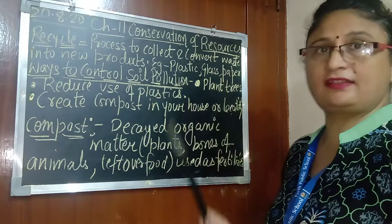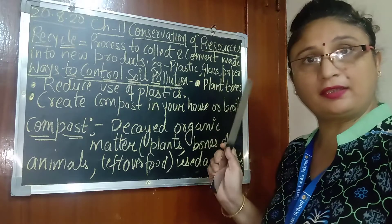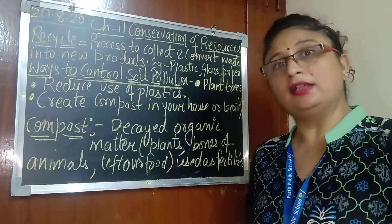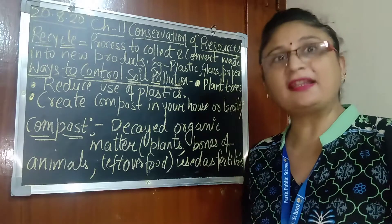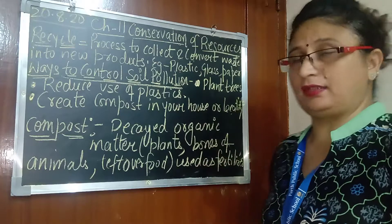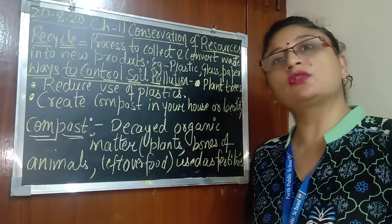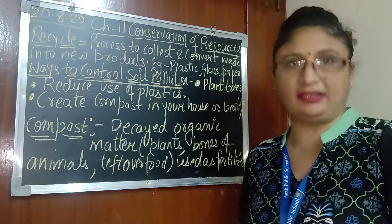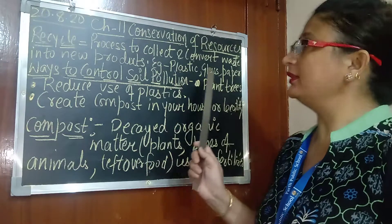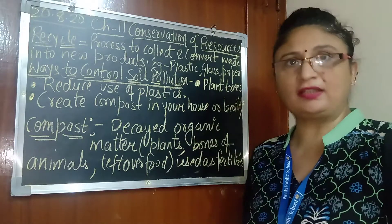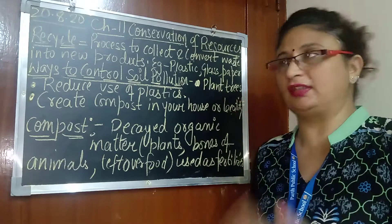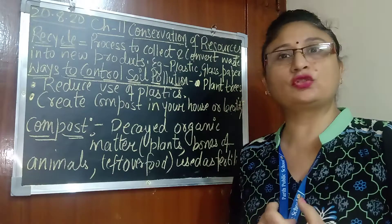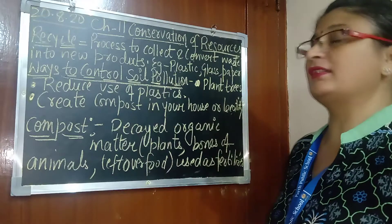We can recycle plastics, we can recycle glass, paper. For example, the newspaper that comes to our home — we are using that paper. Plastic bottles we can reuse by storing some things in those bottles. In this way we can use waste products into new things.